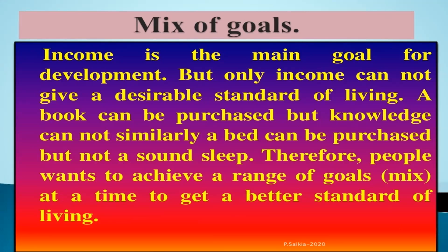However, income alone cannot give a desirable standard of living. A book can be purchased but knowledge cannot; a bed can be purchased but not a sound sleep. Therefore people want to achieve a range of goals — a mixed set of goals — to get a better standard of living. Besides income, people want freedom, better treatment, and respect; they resent discrimination. These are other important goals beyond income and money.